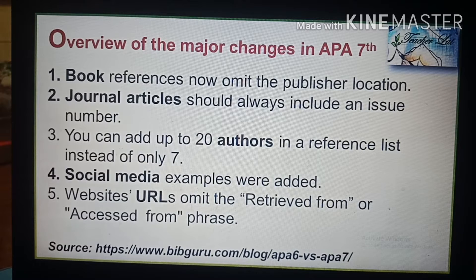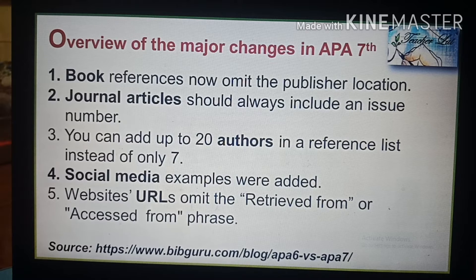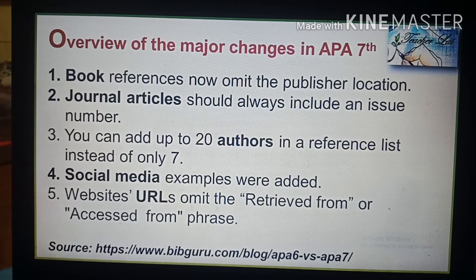Since we keep up to date with the latest citation standards, let us determine the most essential changes between APA 6th and 7th edition. The major changes are: first, book references now omit the publisher location; second, journal articles should always include an issue number; third, you can add up to 20 authors in a reference list instead of only seven; fourth, social media examples were added; and lastly, website URLs omit the 'retrieved from' or 'accessed from' phrase.